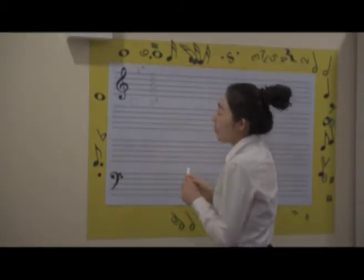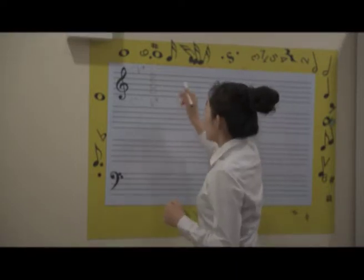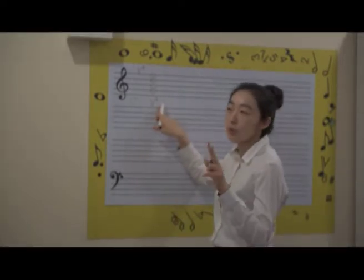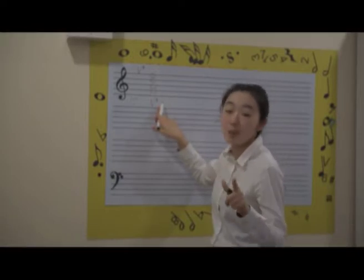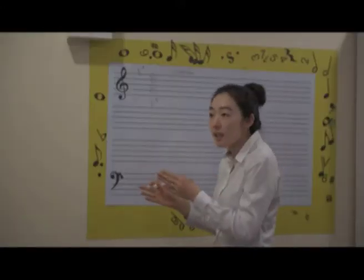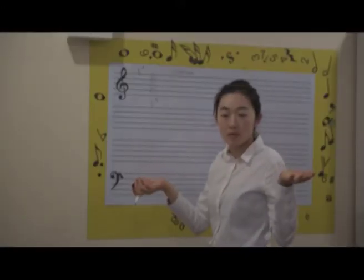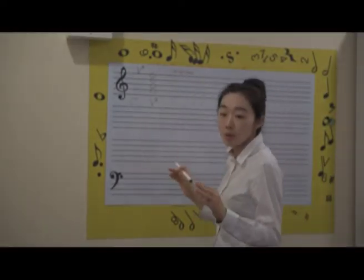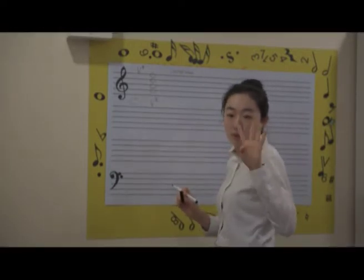Today we're going to focus on the inversions. I want to clarify — for dominant sevenths, we have two versions, one complete and one incomplete. But for inversions, they never have an incomplete form. Because if you're missing one note, they don't know what kind of chord it is — is it a sixth? Sub-mediant? Fourth? Sub-dominant? They can't figure it out. So inversions should have all notes present — four notes.